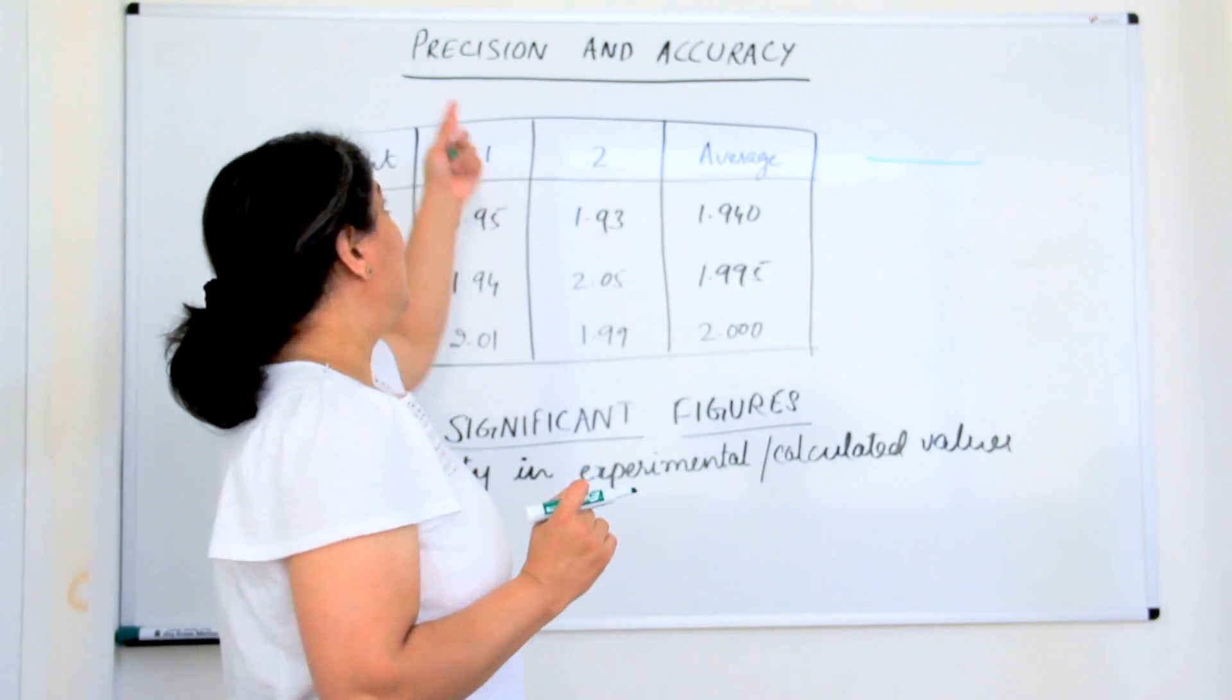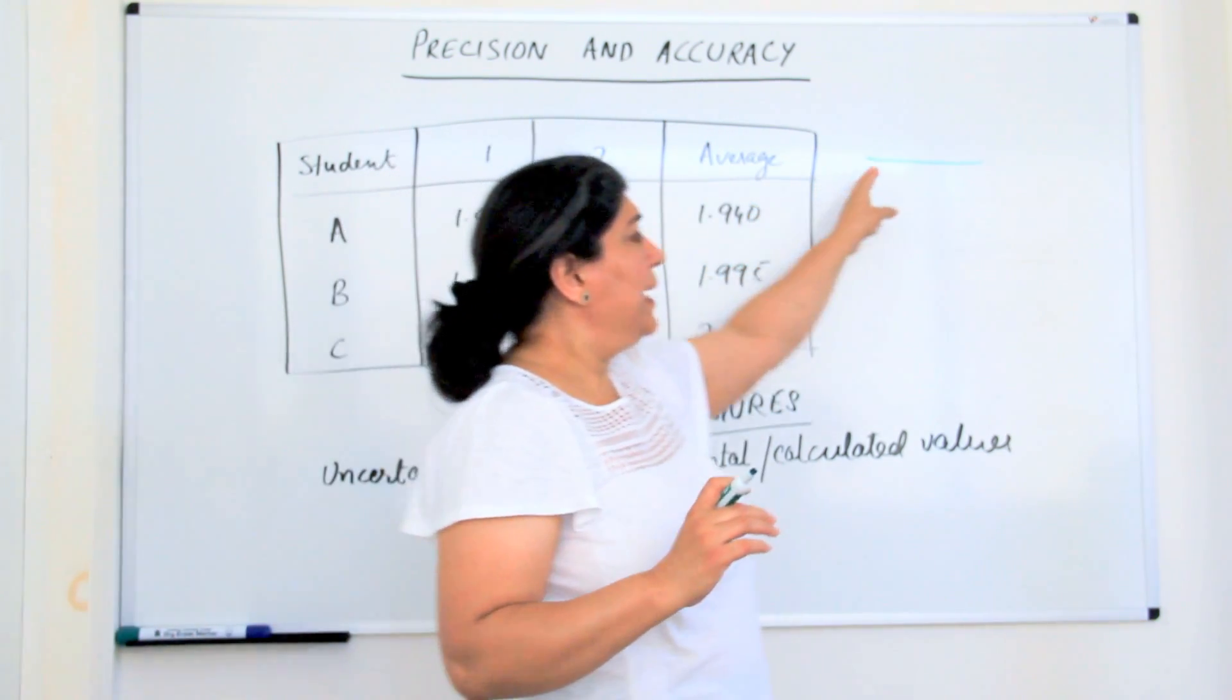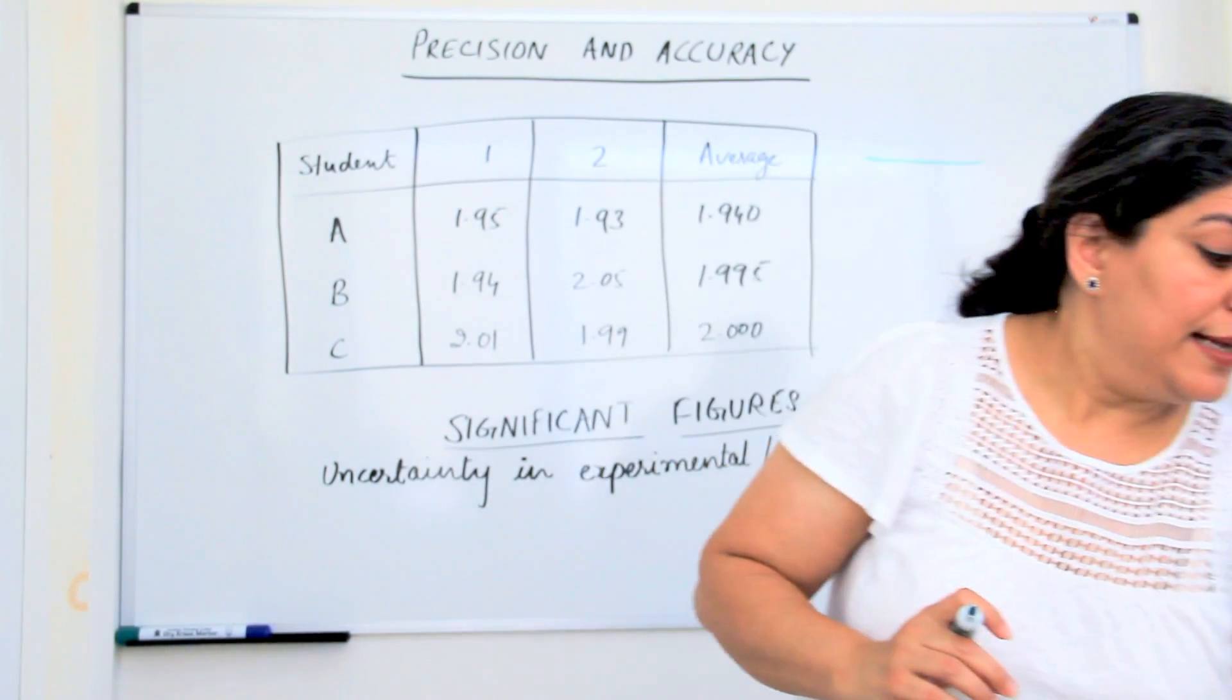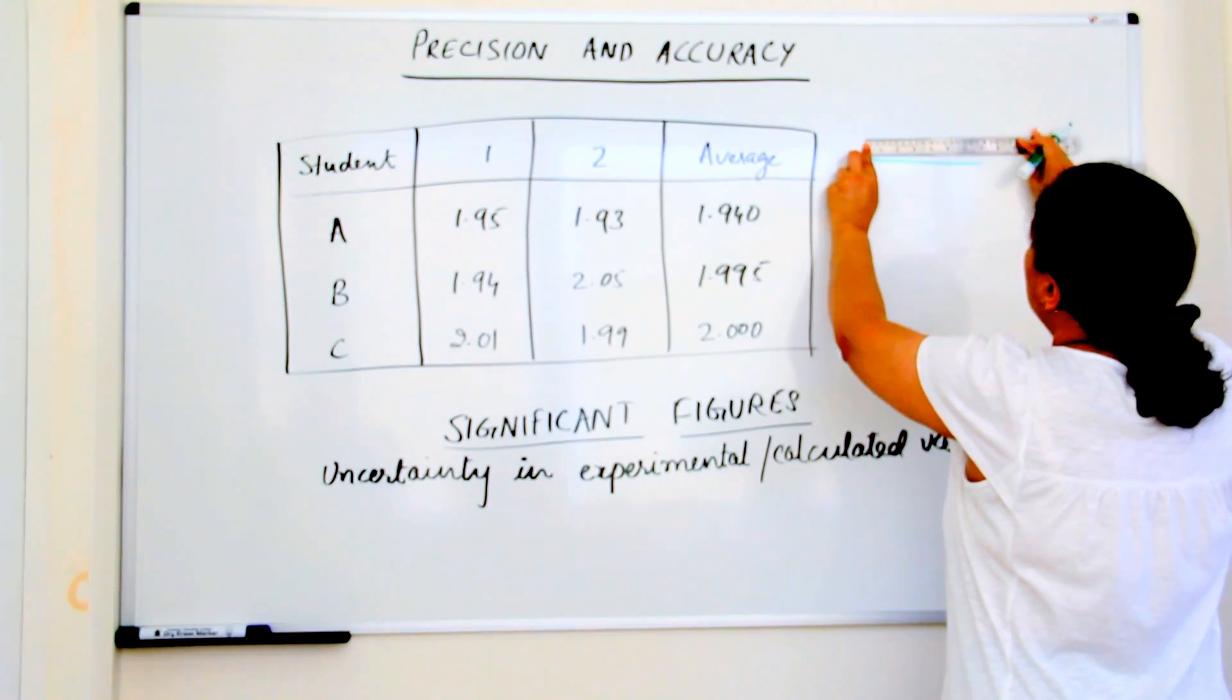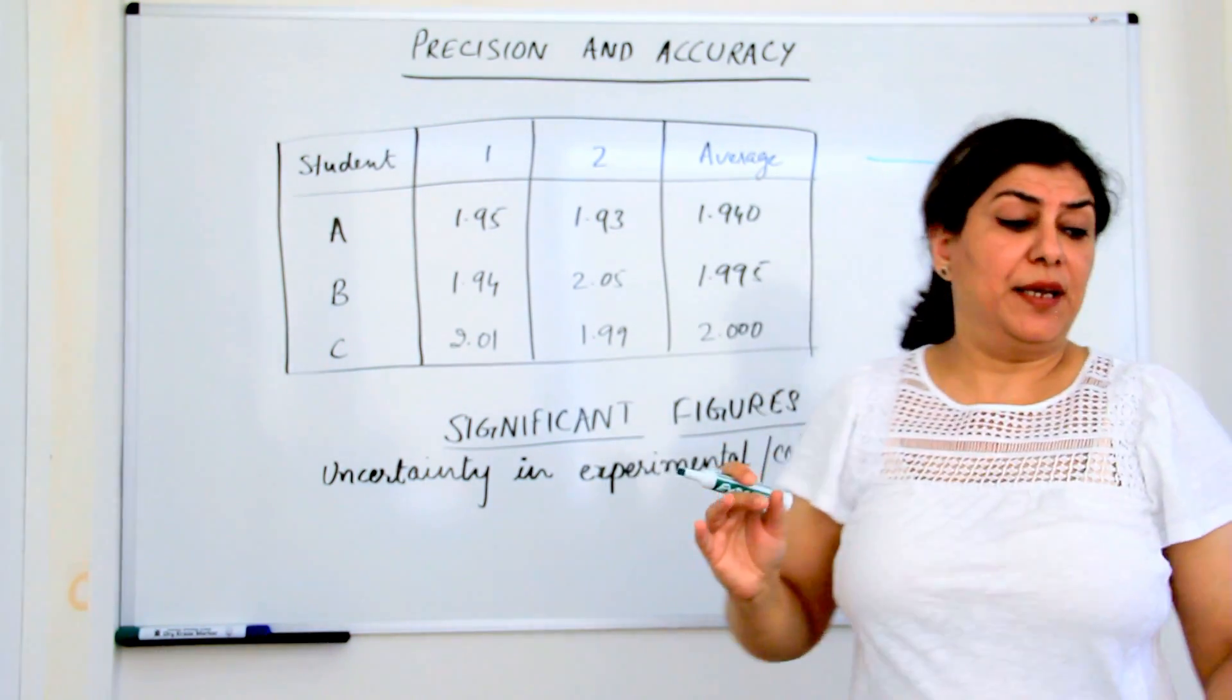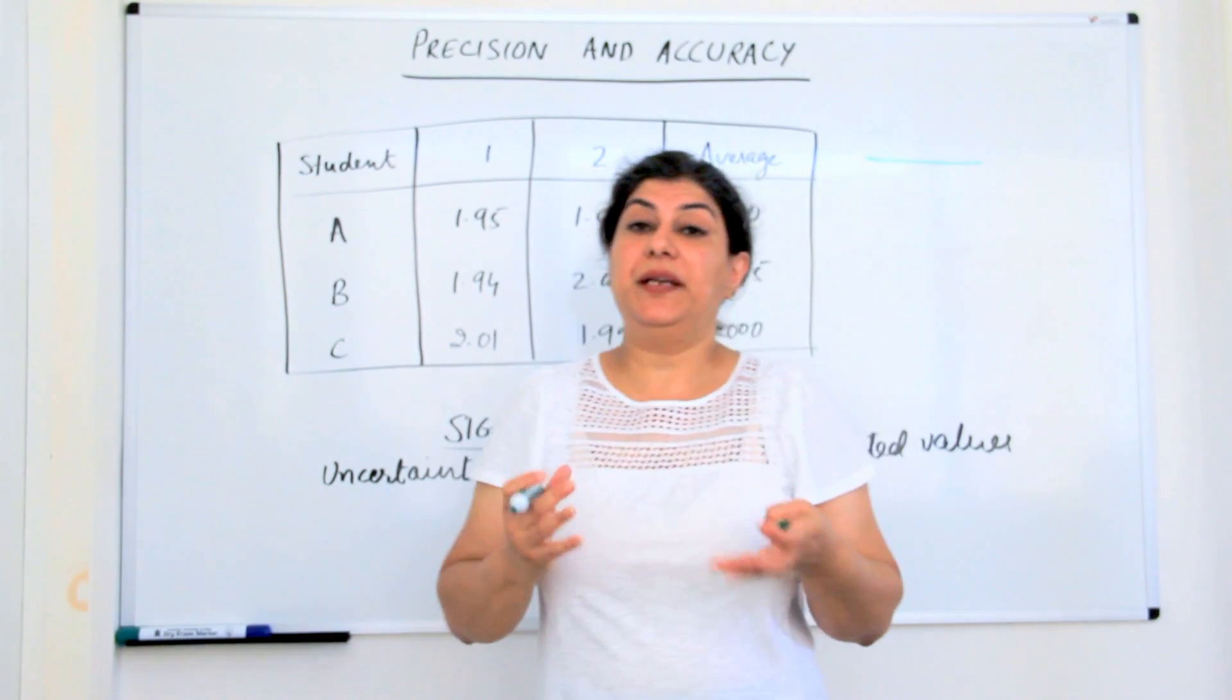So this was accuracy and precision in measurements. Another thing that I wanted to show you by measuring this line was that if I try to measure with a scale, I always have a margin of error. There always has to be an error in the reading. You can never be absolutely correct in your reading.